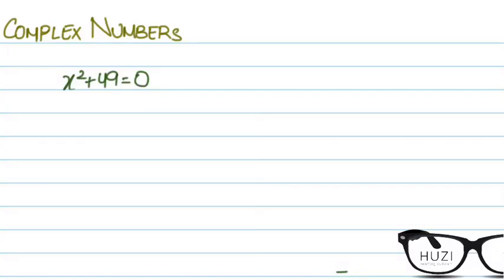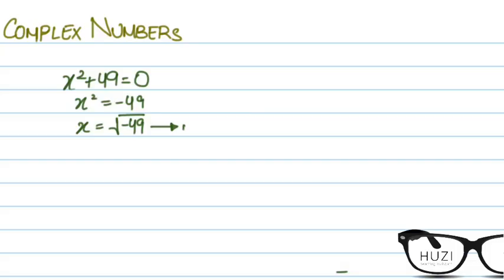So, complex numbers. Let's say we have an equation x² + 49 = 0 and we have to find the solutions. This becomes x² = -49, and x = √(-49). Up until AS level we used to say there are no solutions, because the square of any number is always positive.